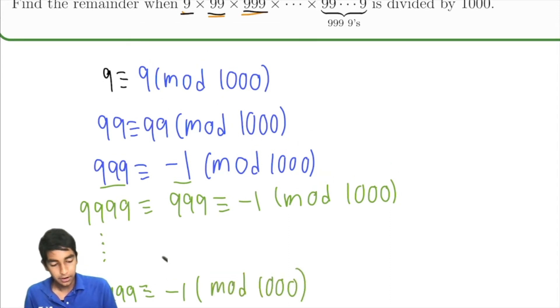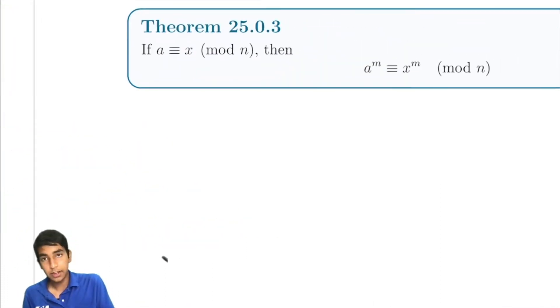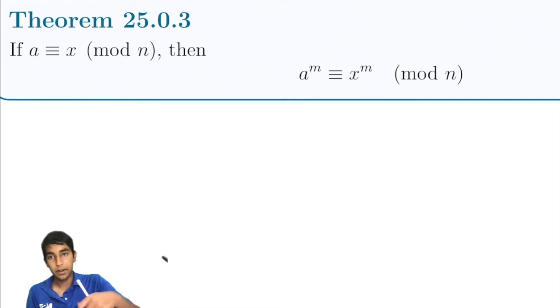So what can we do from here? The key thing is we're going to need to use this theorem. This theorem states that if a equals x mod n, then a to the m is the same thing as x to the m mod n.